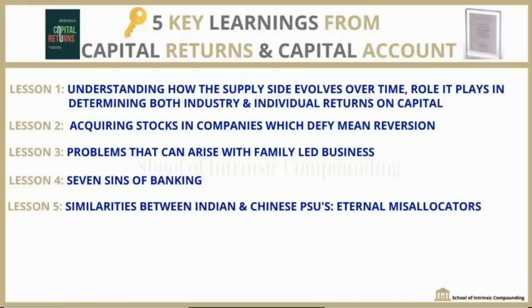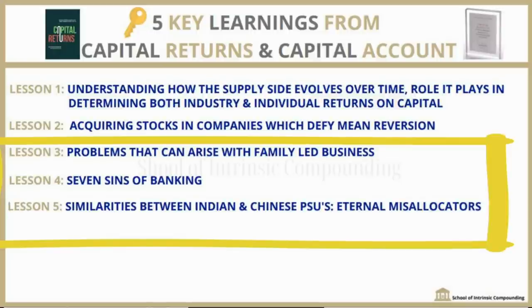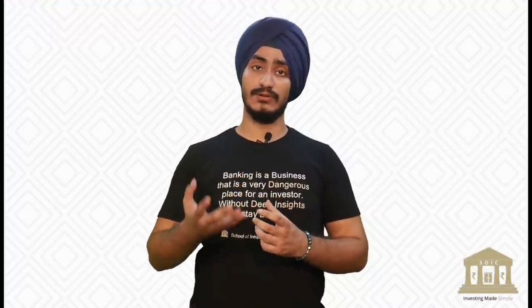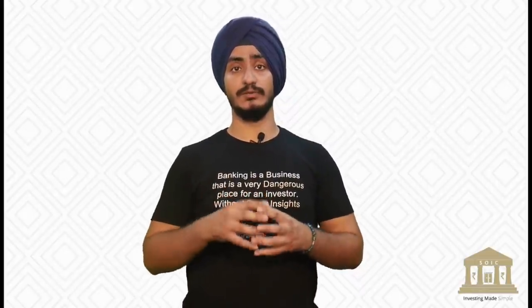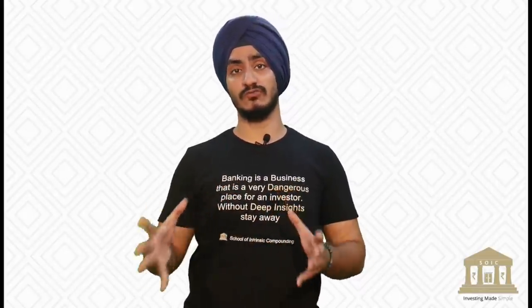Coming to lessons 3, 4, and 5. The third lesson talks about the problems that can arise in family-led businesses. We have heard that promoters should have skin in the game and high promoter holding, but sometimes family-led businesses have specific problems. The fourth lesson is the seven sins of banking. The last lesson will be about similarities between Chinese PSUs and Indian PSUs, which at SOIC we like to call eternal misallocators of capital. Coming to the third lesson — problems that can arise in family-led businesses.